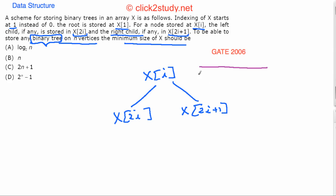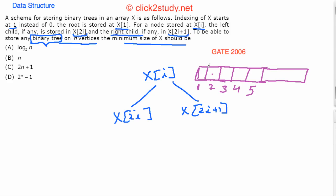Think about the array: the root is here, so the left child of the root is at 2×1=2, and the right child is at 2×1+1=3. The children of node at index 2 go to 4 and 5, and so on. You can see that the right child goes to the right extreme in this array.